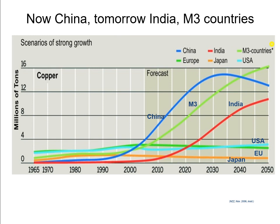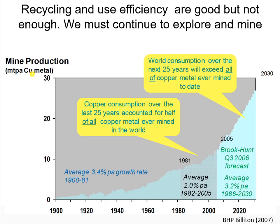This is showing something quite scary: looking at our need for copper, the EU, USA, Australia, and Japan — the modern economies — have wired stuff up and are relatively flat. But look at the emerging economies: India, China, and the rest of the world. The prediction is that we will have to mine more copper in the next 25 years than we've ever mined in all of our history. World consumption over the next 25 years will exceed all of the copper ever mined today. This means more mines for more copper — or we come up with alternatives.